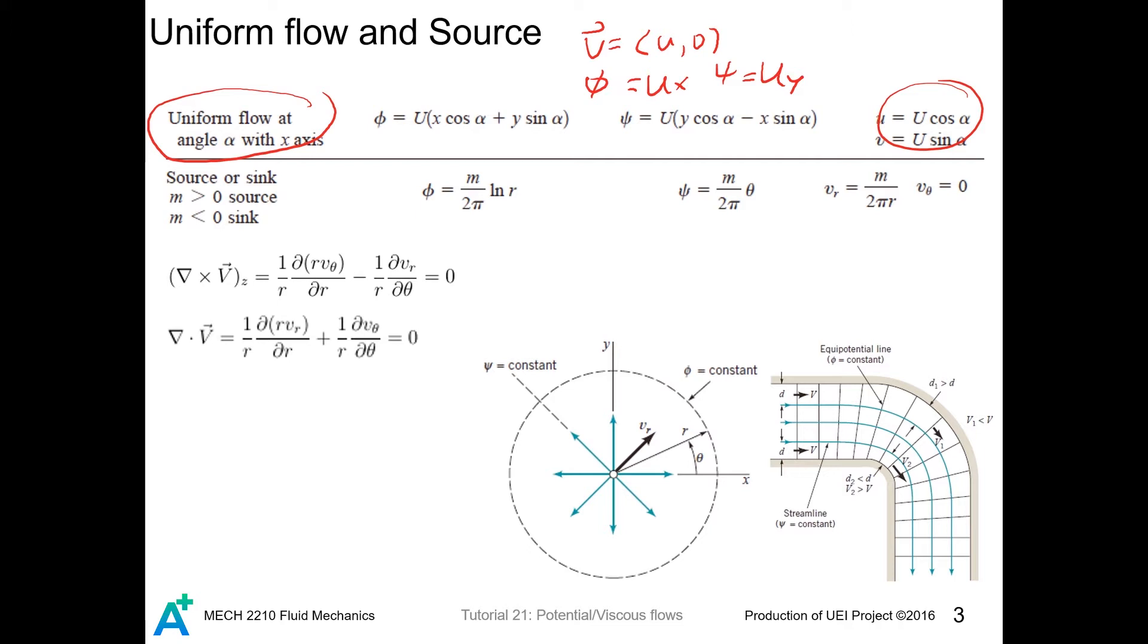If we want a purely radial potential flow, then the flow must be the one described in this table. To see why, we first consider the irrotational requirement. The irrotational requirement requires that the z component of curl goes to zero. Since what we want is a purely radial flow, the tangential component is zero, so this term is zero. Therefore, the radial component itself cannot be a function of theta.